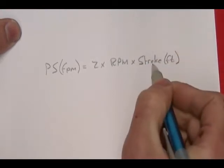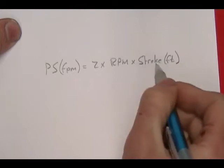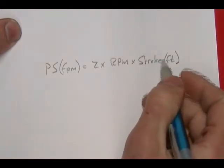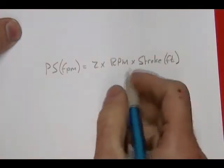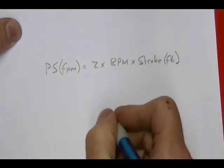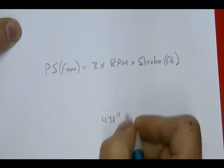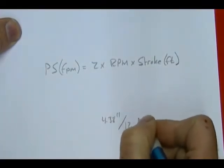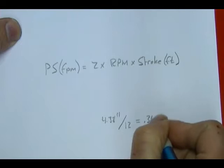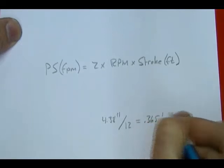When you find the spec for whatever engine you're calculating, this is probably going to be in inches. The stroke for the 96 Twin Cam is 4.38 inches, and to convert that to feet you divide by 12, which will give you 0.365 feet.